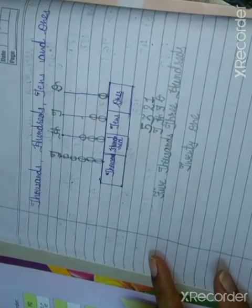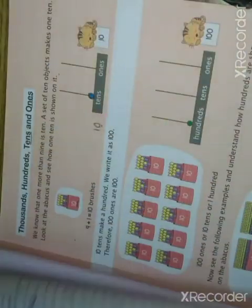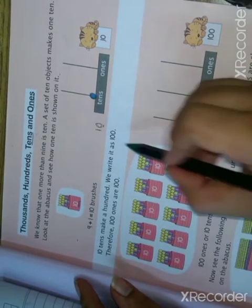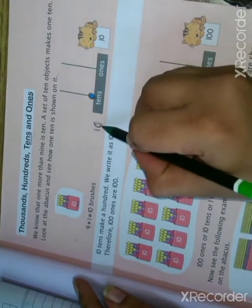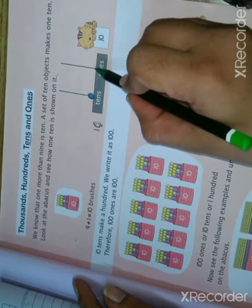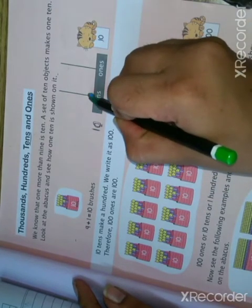I hope you are clear about this. Let's see in our textbook. You see here, this is one bucket. How many brushes are there? One, zero — ten brushes. So in the ones place, zero beads. You don't have to draw any beads. But in the tens place, one is there, so you have to draw one bead.